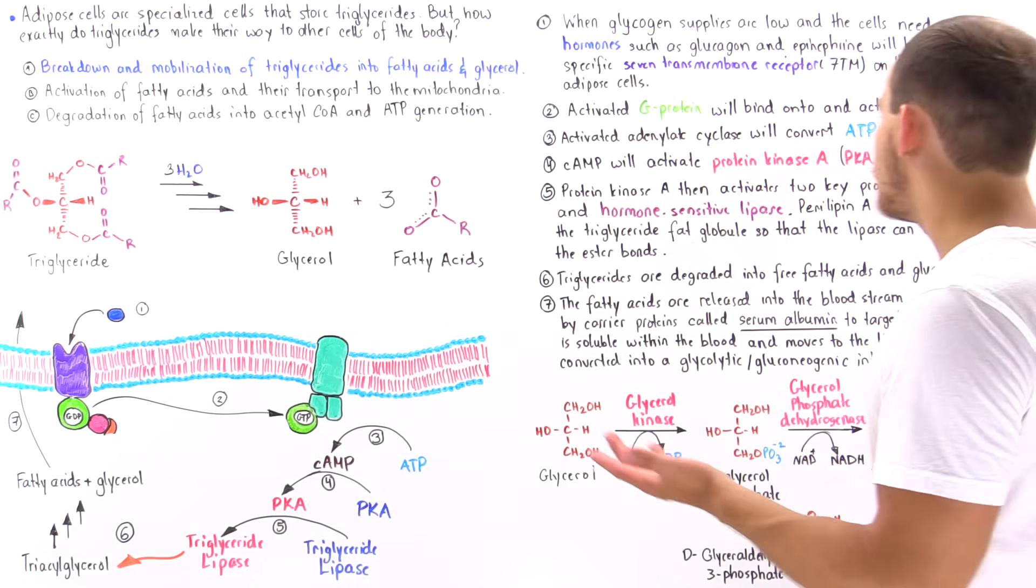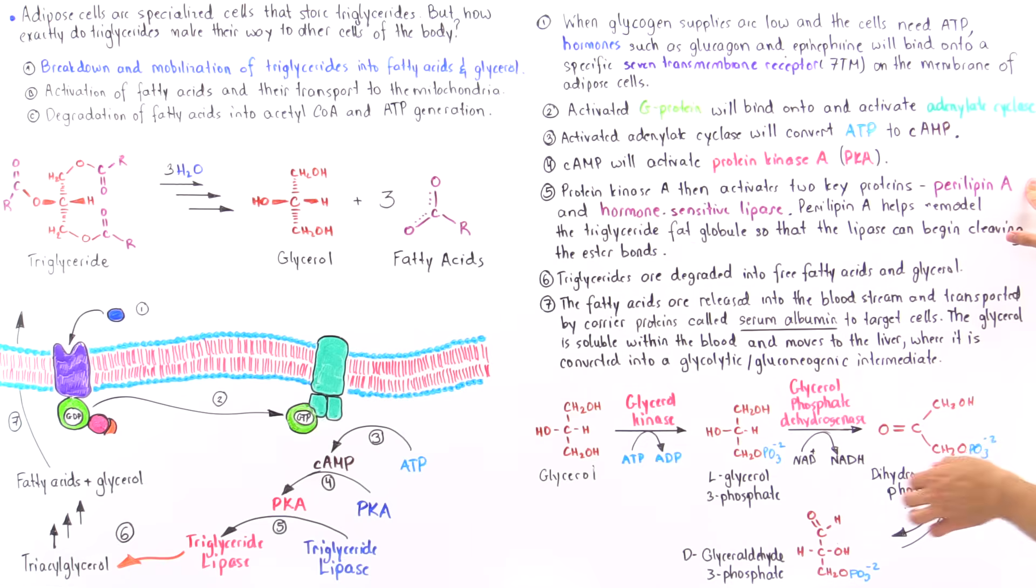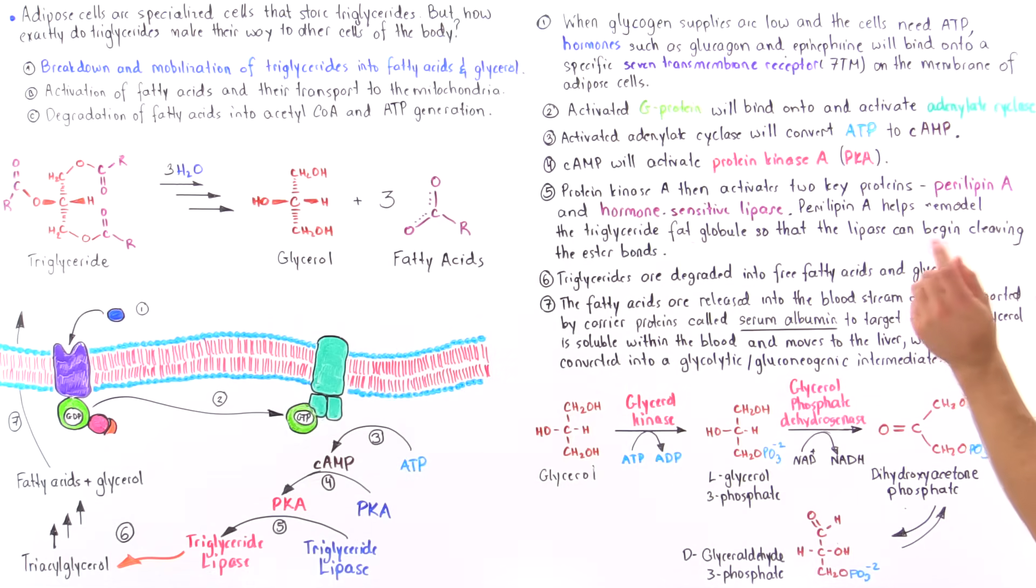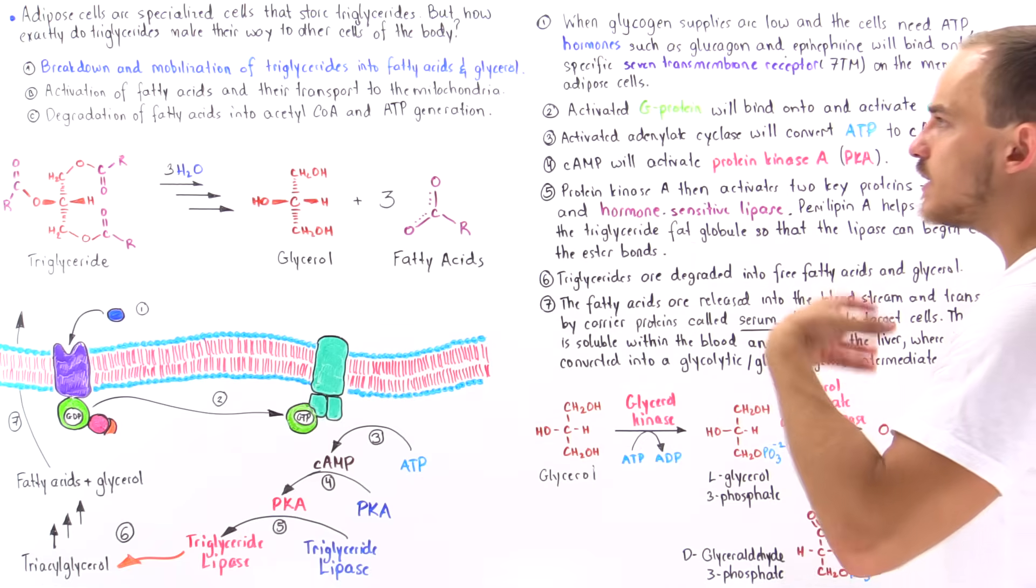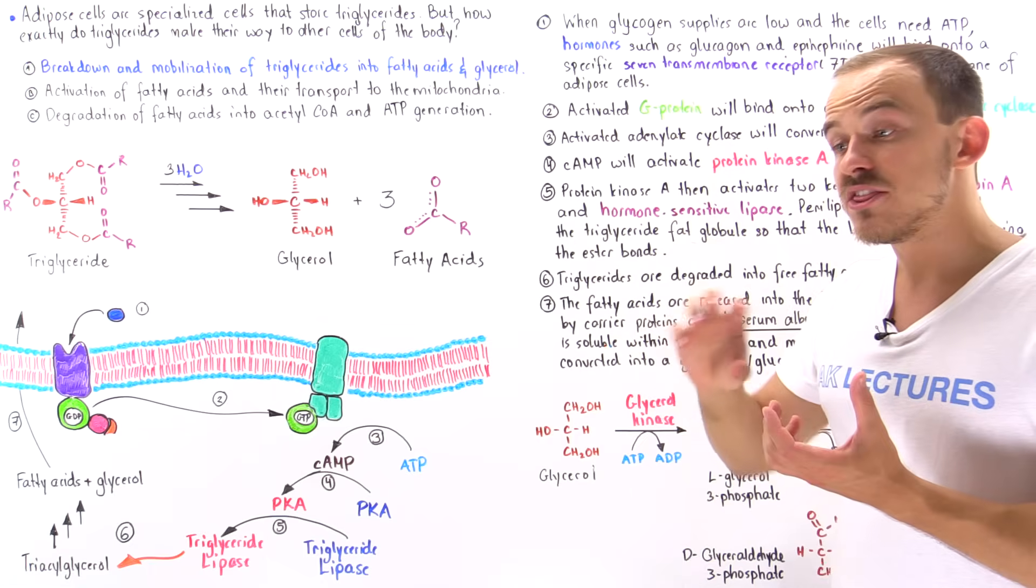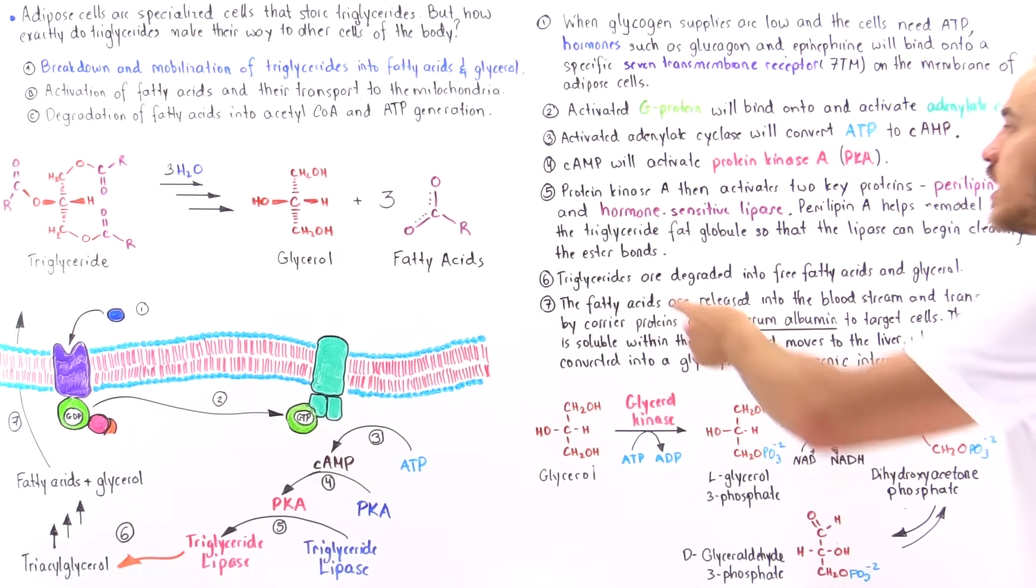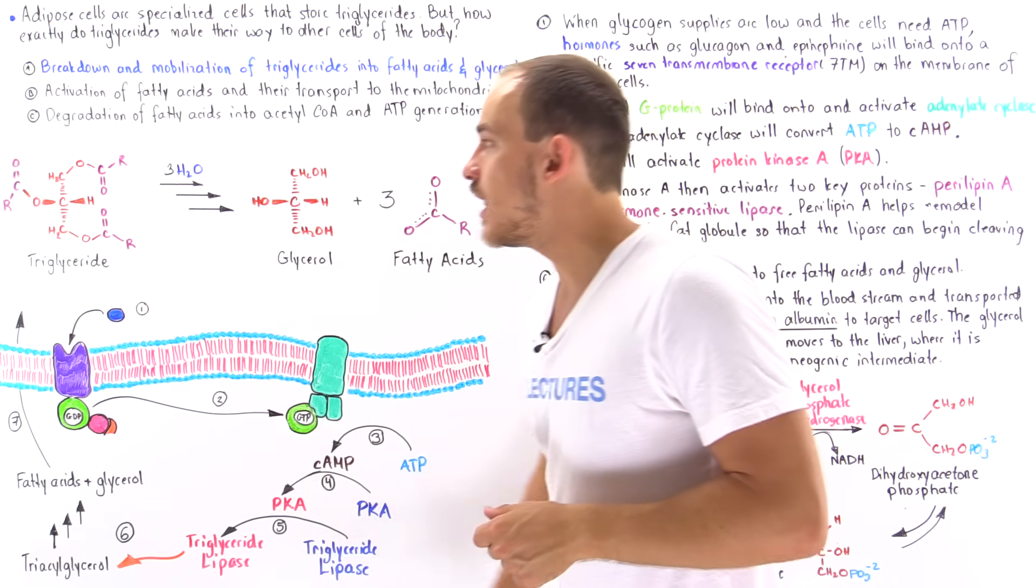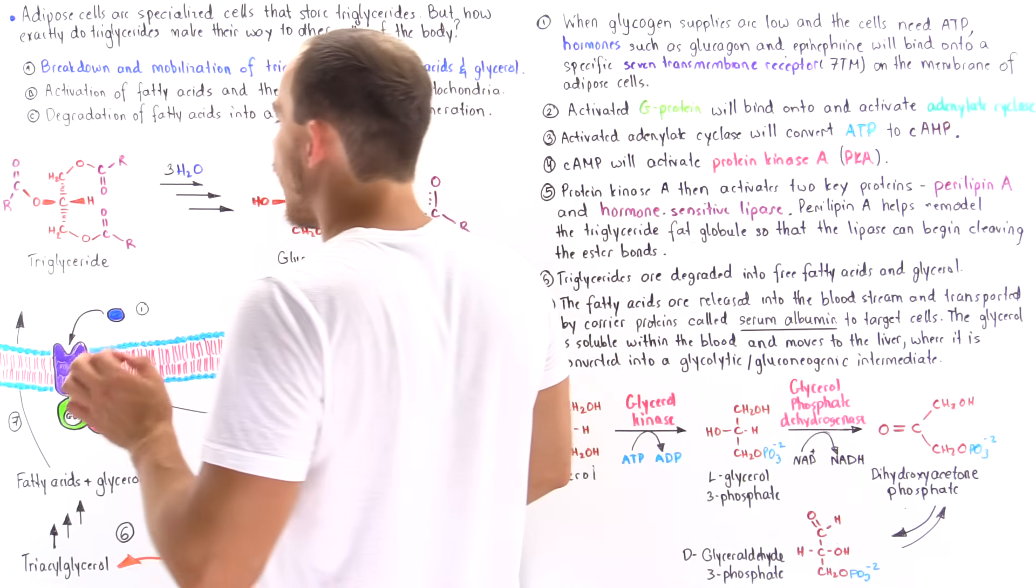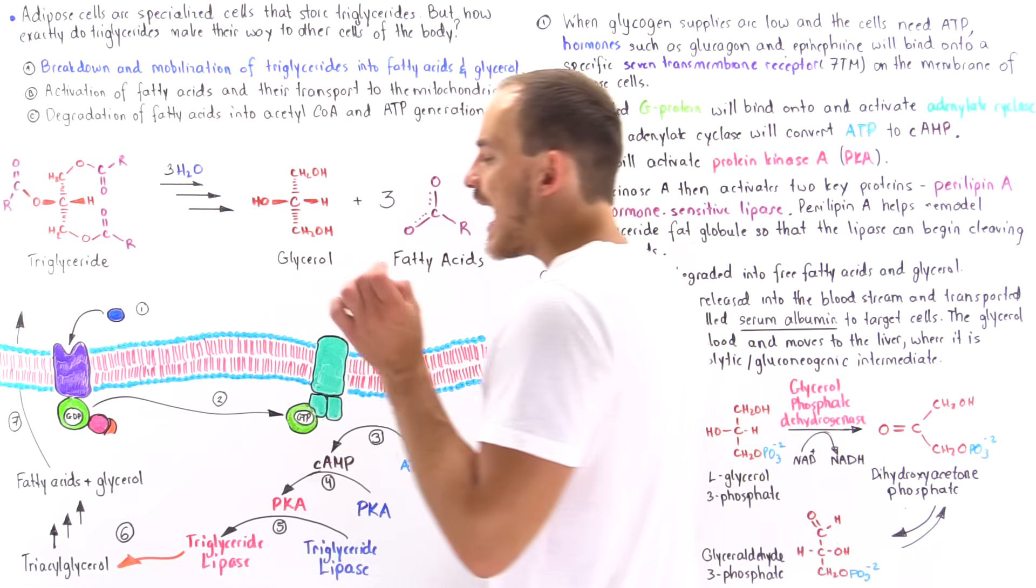What are these important enzymes? Well one of them is known as perilipin A, and the other set of enzymes are known as hormone-sensitive lipases. These two enzymes work together to help break down these triglycerides into fatty acids and glycerol molecules. More specifically, the perilipin A binds onto the fat globules found in the cytoplasm of adipose cells and stimulates the remodeling and restructuring of these fat globules. What that does is it exposes the ester bonds of the triglycerides. Now the hormone-sensitive lipases, such as triglyceride lipase, bind onto those exposed ester bonds and begin cleaving, breaking, hydrolyzing those triglyceride ester bonds.